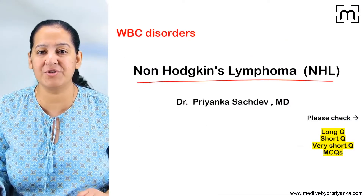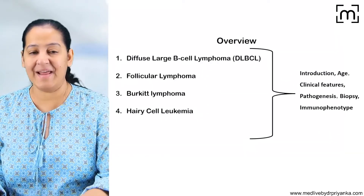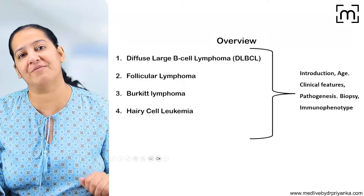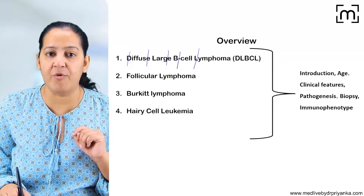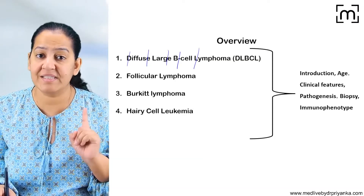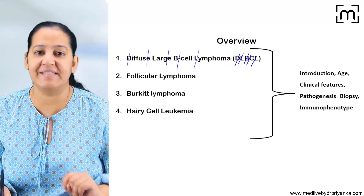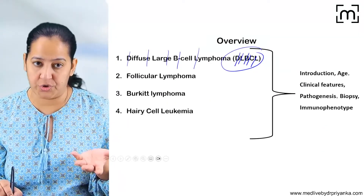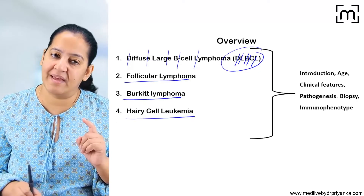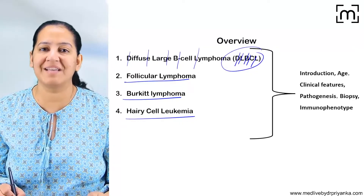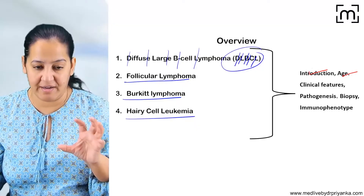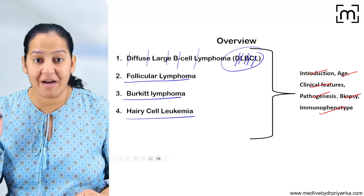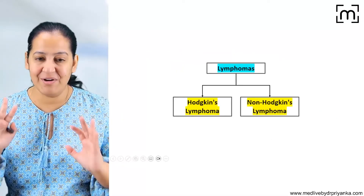Let's start the important topic — NHL, Non-Hodgkin's Lymphoma. We will cover four important types. First is Diffuse Large B Cell Lymphoma, DLBCL, which is the most common Non-Hodgkin's Lymphoma. Second is Follicular Lymphoma, third is Burkitt Lymphoma, and fourth is Hairy Cell Leukemia or Lymphoma. For each, we will cover introduction, age of presentation, clinical features, pathogenesis, biopsy, and immunophenotype, and make a comparative table at the end.